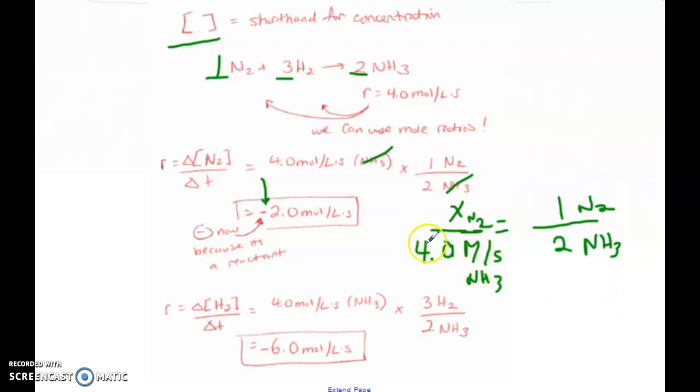It works the same way. It's going to be 4 times 1 divided by 2. So you're doing cross multiplication to solve for X. So I actually don't mind which way you set this formula up. But at the end of the day, you're using mole ratios to figure out the rate of something else in that equation.